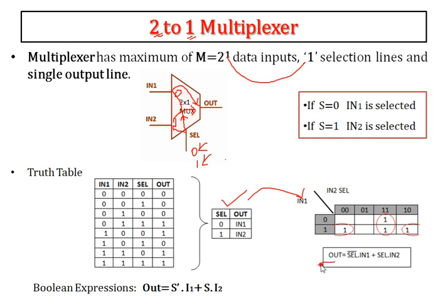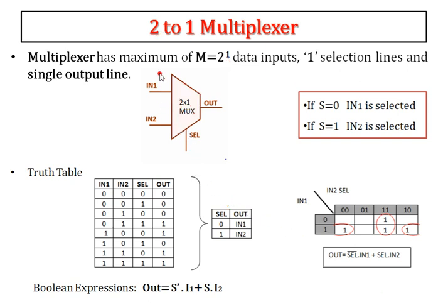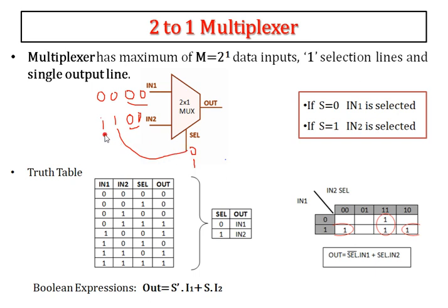In order to derive the Boolean expression, I am taking the expanded version of the truth table. The 2-to-1 multiplexer has 3 inputs — IN1, IN2, and the selection line — giving 8 total combinations: 0,0,0 / 0,0,1 / 0,1,0 / 0,1,1 / 1,0,0 / 1,0,1 / 1,1,0 / 1,1,1. These 8 combinations are used to derive the Boolean expression.